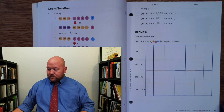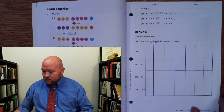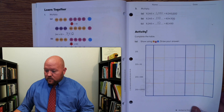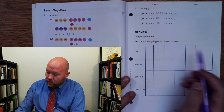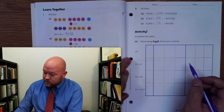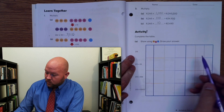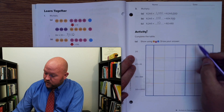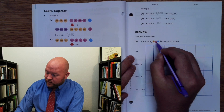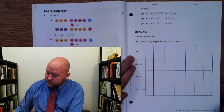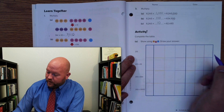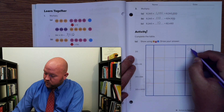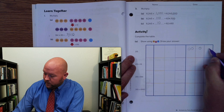Let's look at this activity. Now we're going to use the place value disk to show this. I won't put 100, 10, and 1 — we'll just use the place value disk. So here we have 2, 1, 3.